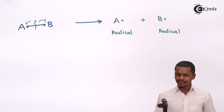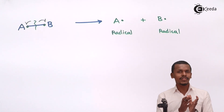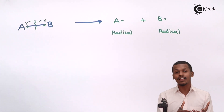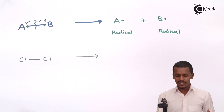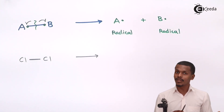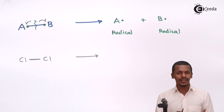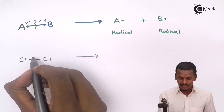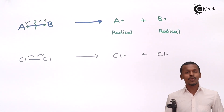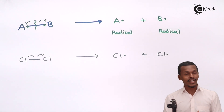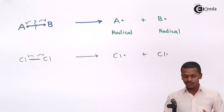Homolytic fission is observed when both atoms in a molecule are the same — for example, Cl₂. Since both chlorine atoms have the same electronegativity, when the bond breaks, there is no bias for one atom to pull both electrons. Each chlorine atom acquires one electron, forming two chlorine radicals. This is homolytic fission.